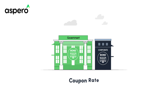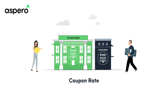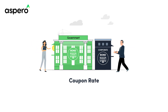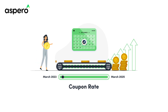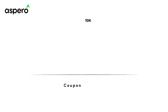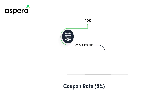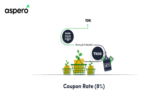Let's start with coupon rate. Imagine you're lending money to a company or the government by purchasing a bond. The coupon rate is the interest rate per annum on the bond's face value that the issuer promises to pay you back periodically. For example, if you invest Rs 10,000 in a bond with an 8% coupon rate, you'll receive Rs 800 interest income annually until the bond matures.